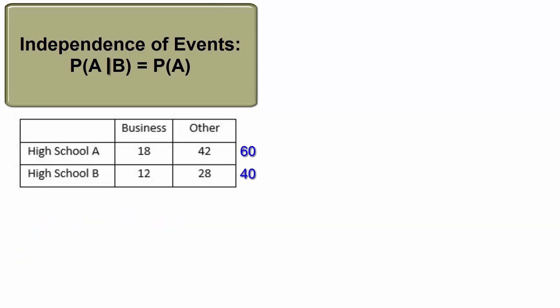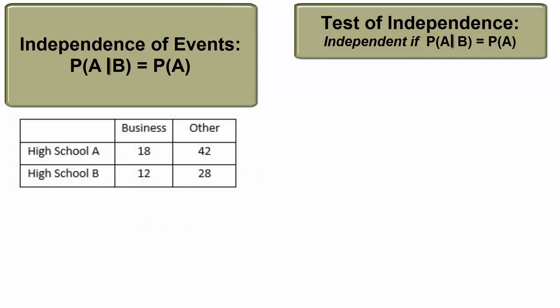But if you knew a student was selected from school B, would that change the probability of he or she declaring business? No, it would not. This conditional probability, if we shrink the sample space to the 40 students from high school B, is also 0.3. Both conditional probabilities equal the original probability. This is the first test of independence.